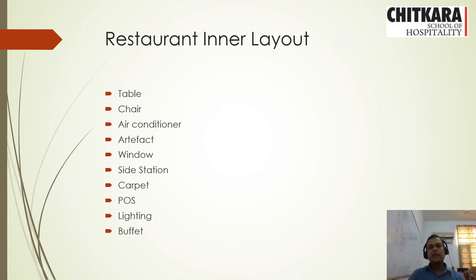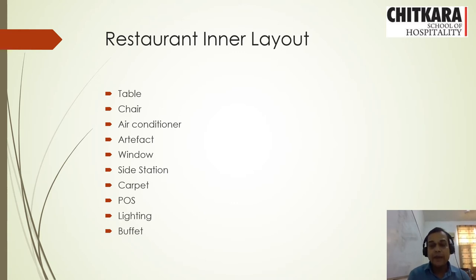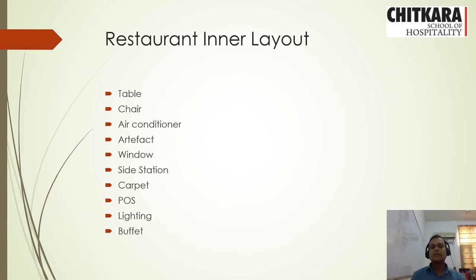When we talk about the restaurant inner layout, one key element is tables. Tables could be in three forms, keeping in mind the number of guests they can seat — they could be round, square, or rectangular in nature. These three different types of tables in different sets are used inside the restaurant to maximize space utilization and keep the layout presentable. Chairs used are upholstery-based wooden frame chairs, which are comfortable and placed with the tables for guests to sit.